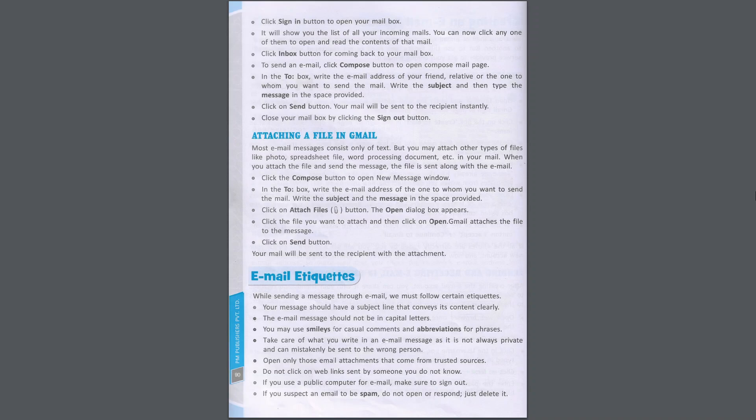Attaching a File in Gmail. Most email messages consist only of text, but you may attach other types of files like a photo, spreadsheet file, word processing document, etc. in your mail. When you attach the file and send the message, the file is sent along with the email. Click the Compose button to open the New Message window. In the To box, write the email address of the recipient. Write the subject and message in the space provided. Click the Attach Files button; an open dialog box appears. Click the file you want to attach and then click Open. Gmail attaches the file to the message. Click the Send button and your mail will be sent to the recipient with the attachment.